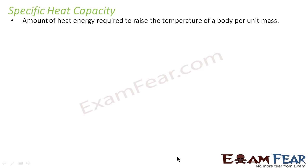Specific heat capacity is nothing but the amount of heat energy required to raise the temperature of a body per unit mass. That means it is the amount of heat energy to raise the temperature of an object per unit mass — one unit mass. What is unit mass? One unit mass would mean one gram or one kilogram. So in order to raise the temperature of unit mass, whatever is the amount of heat energy required, that is known as specific heat capacity.